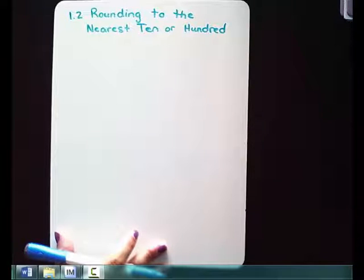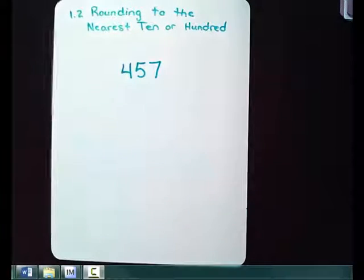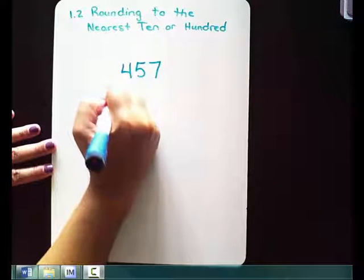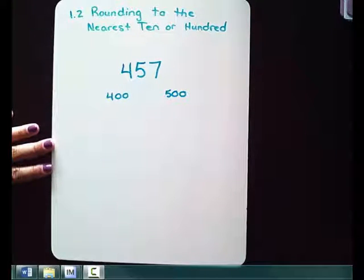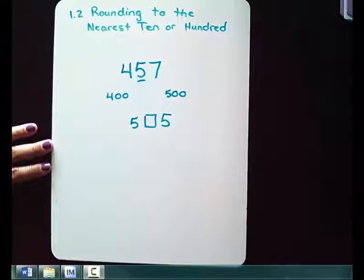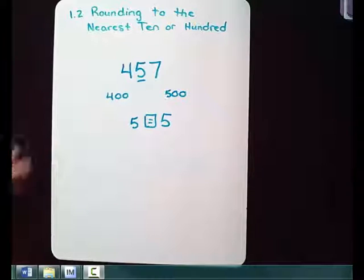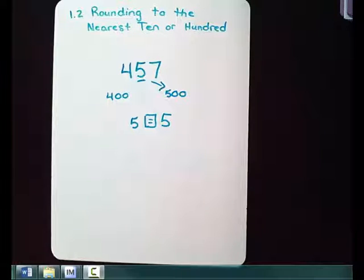You might be asking: what happens if that digit is exactly 5? Let's take 457 and round to the nearest 100. It falls between 400 and 500. Since we're rounding to the nearest 100, we look at the tens place, which is 5. Is 5 less than, greater than, or equal to 5? It's equal. When it's equal to 5, you round up — 457 rounds up to 500, because 5 is closer to 500 than it is to 400.